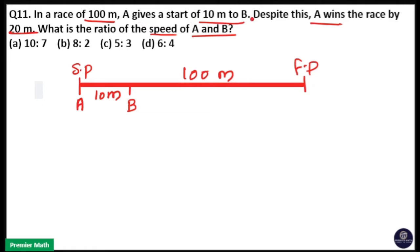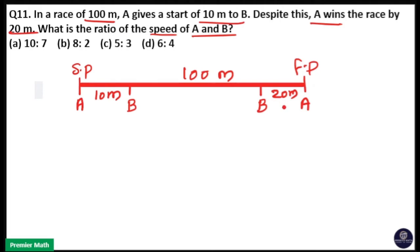A gives a start of 10 meters to B means when B finishes 10 meters, A starts the game. A wins the race by 20 meters means when A reaches the finishing point and covers 100 meters, B is still 20 meters behind — that is, B is at 80 meters.